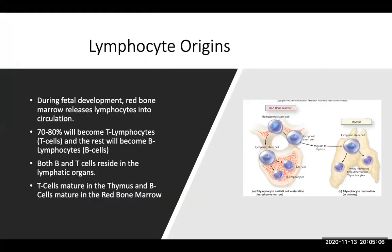During fetal development, your red bone marrow will release lymphocytes into circulation. Seventy to eighty percent will become T lymphocytes, or T cells, and the rest will become B lymphocytes, or B cells. Both B and T cells reside in your lymphatic organs. T cells will mature in the thymus, and B cells will mature in the red bone marrow.